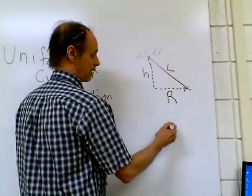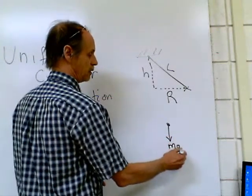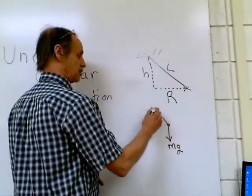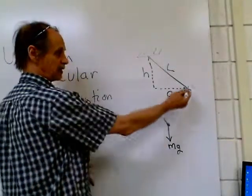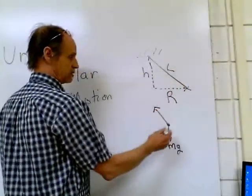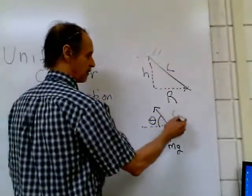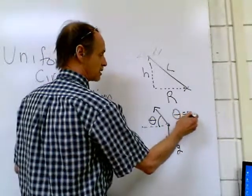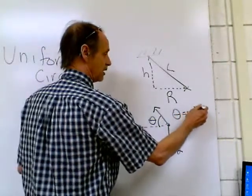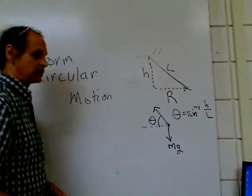A force diagram would look like so. You have the weight acting downward and the tension in the rope acting at the same angle as the string. This angle theta you can find from your measurements—it's the inverse sine of h over L, for instance.